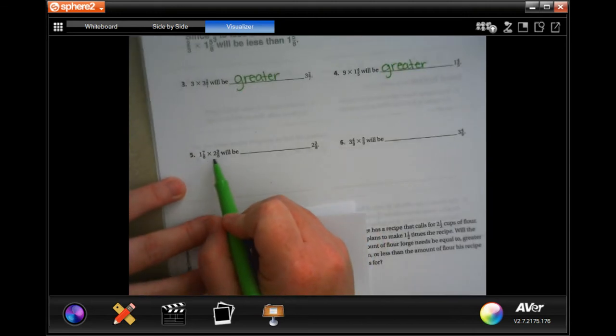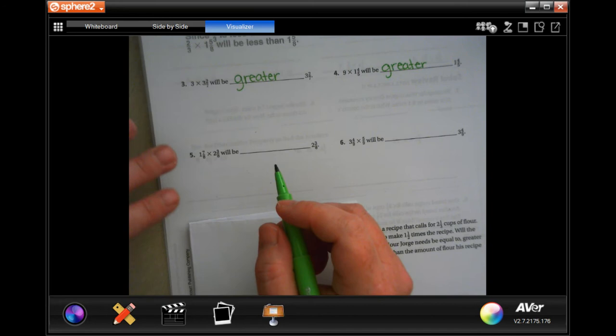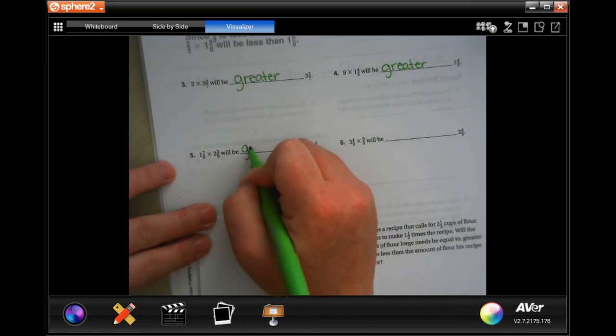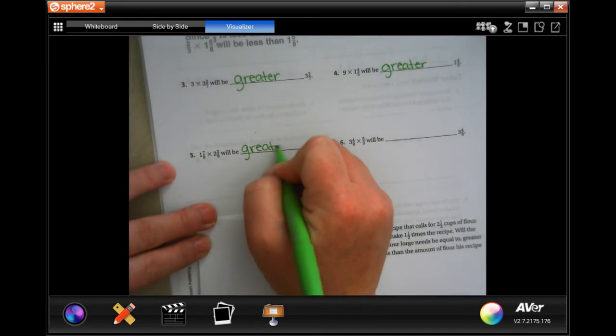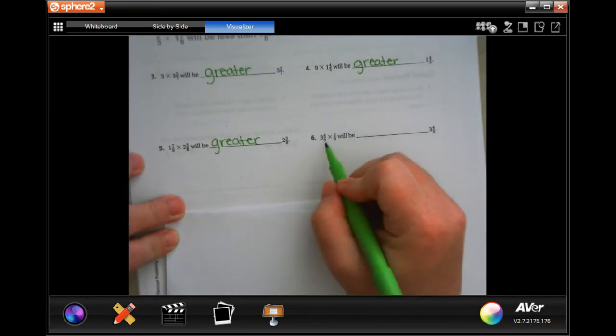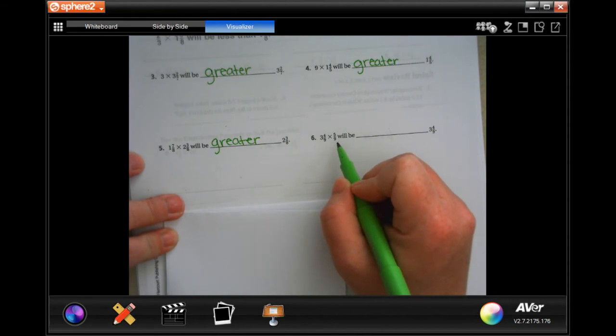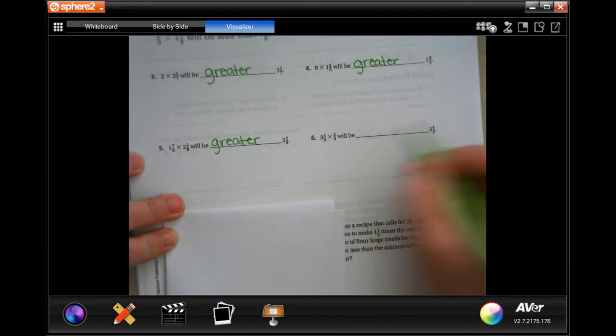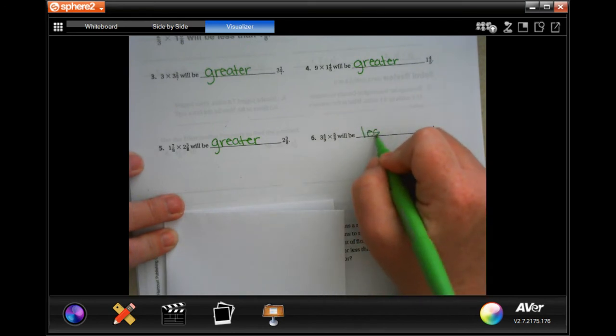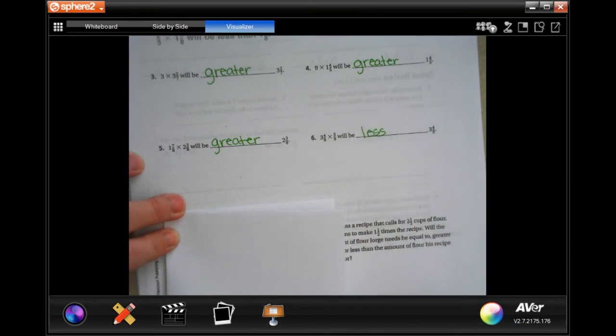Whole number with a fraction, whole number with a fraction, we're doing just fine, so it's going to be greater than. It is when you are multiplying a whole number or a whole number with a fraction by a number smaller than 1. Well, 5 ninths is smaller than 1, so it's going to be less.